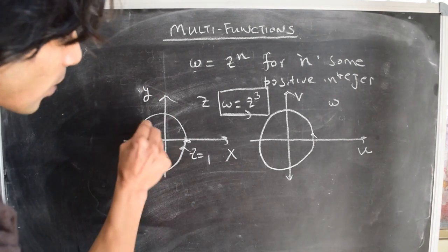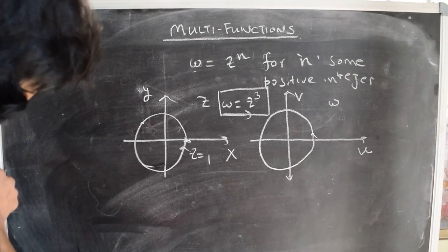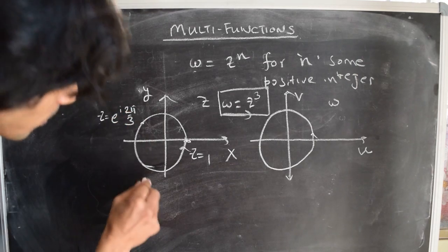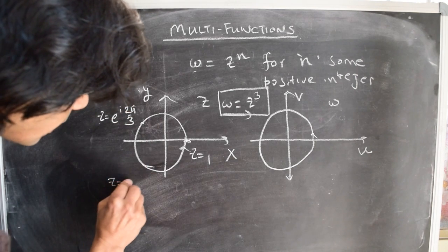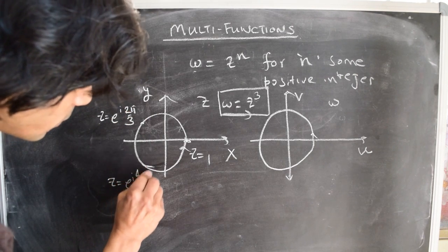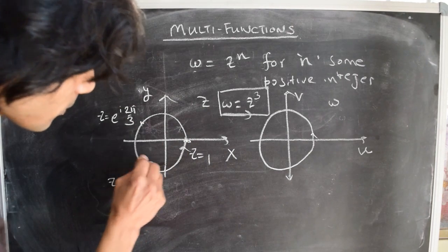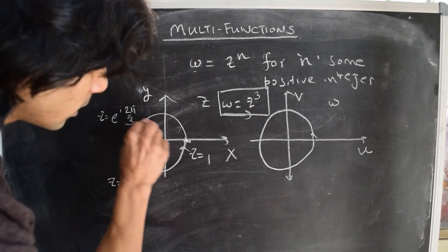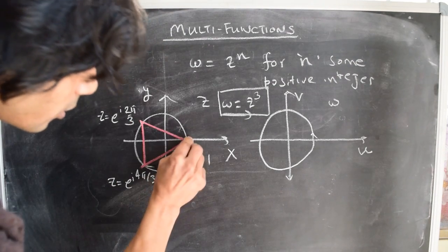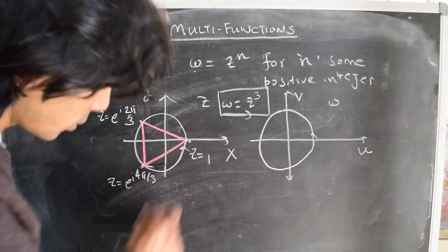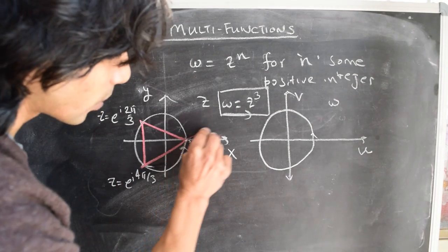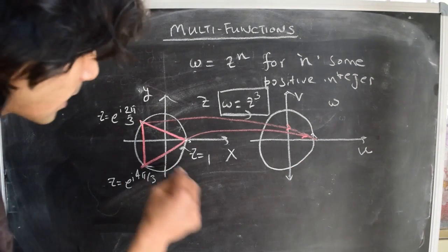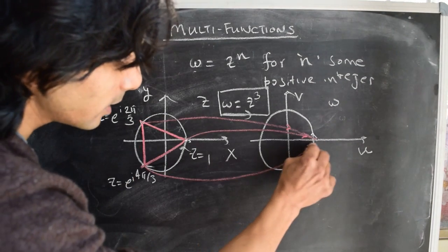If you look at the point z equals 1, the point z equals e to the power of i·2π/3, and the point z equals e to the power of i·4π/3, we saw that all three of these points — which actually lie on the vertices of an equilateral triangle — all three vertices map to the same point w equals 1 in the w-plane. The images coincide at the point w equals 1.